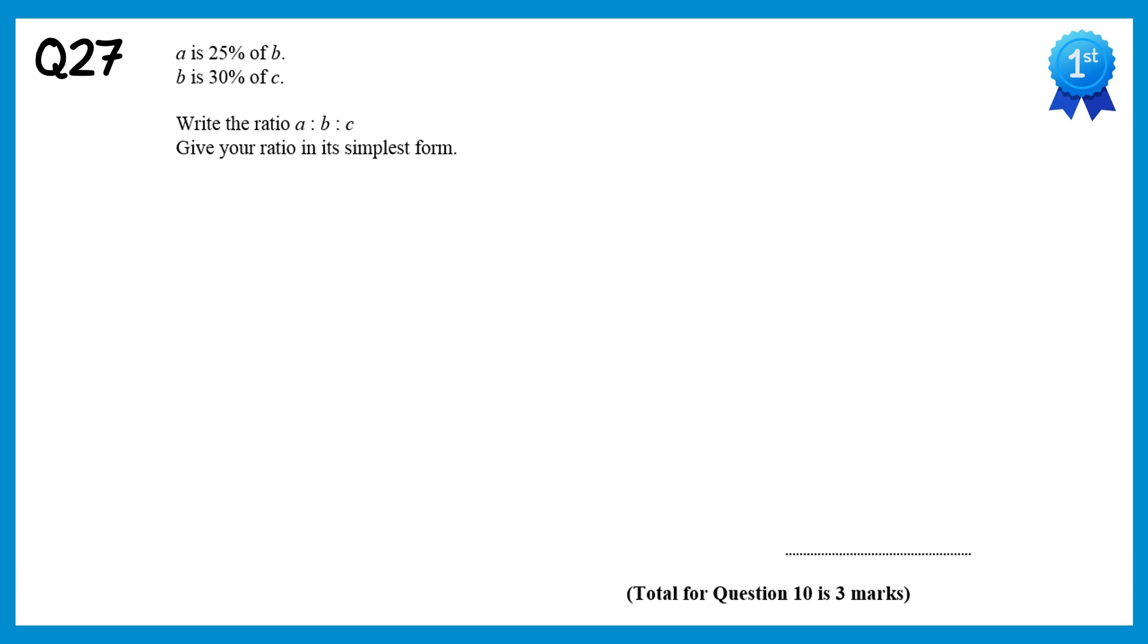In this question we'll first of all write down the ratio a to b. We're told that a is 25% of b, which means the ratio would be 25 to 100. We're also told that b is 30% of c, so for the ratio b to c, it would be 30 to 100. Now both of these ratios simplify. If you divide the top one by 25, you'll get 1 to 4, and if you divide the bottom one by 10, you'll get 3 to 10.